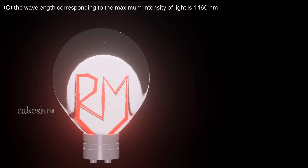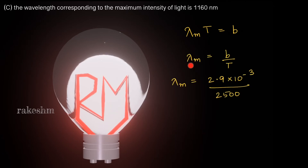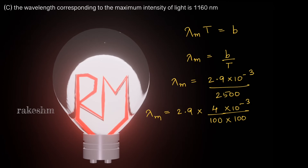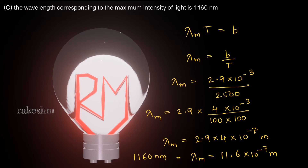The next statement: the wavelength corresponding to maximum intensity of light is 1160 nanometers. Using Wien's displacement law: λm × T = b. With b = 2.9 × 10⁻³ and T = 2500 K, λm = 2.9 × 10⁻³ / 2500 = 2.9 × 10⁻³ / (25 × 100). Writing 25 as 100/4 simplifies to 11.6 × 10⁻⁷ m = 1160 nanometers.